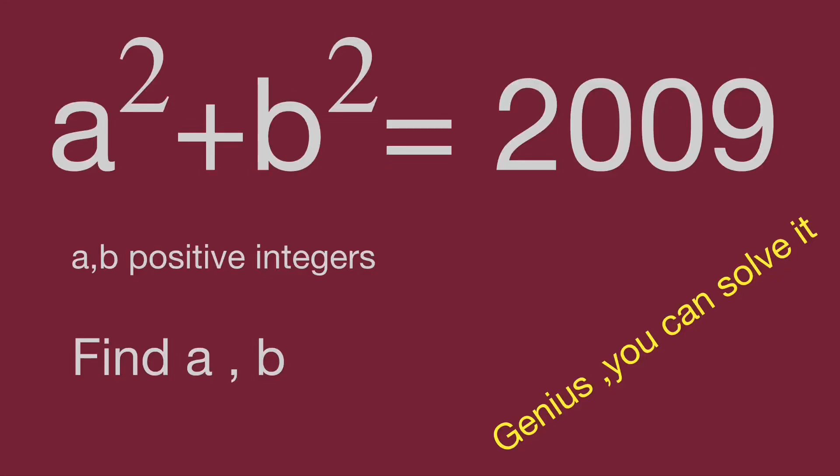Hello, you are watching Balahibo Math Genius Reader. Here's a very challenging question from the web: a squared plus b squared equals 2009, where a and b are positive integers. Find the value of a and b. In this video, we are going to solve it in an interesting way.